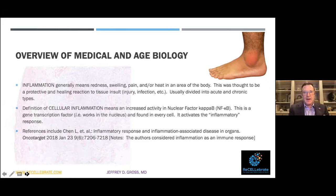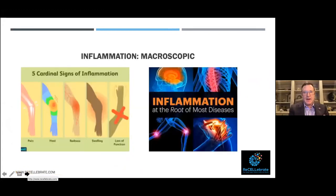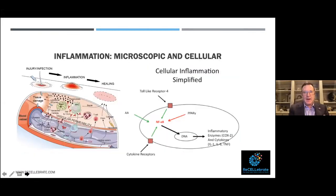I'll give some references during the talk and I'm happy to take questions afterward. We know that the cardinal signs of inflammation are at the root cause of many disease processes, and there's a microscopic and cellular aspect. Looking at the diagram, you can see what's happening microscopically as a reaction to inflammation — even intranuclear. NF-κB is a very large mediator of this cellular response, whereas PRP involves many growth factors working both intracellularly and extracellularly.